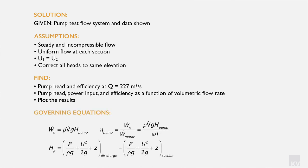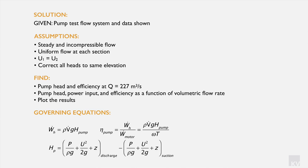Our governing equations are the same as in the previous problem. The work required to develop the head is: Ẇ_H = ρ × Q × g × H_P. The motor efficiency is the work involved in developing the head divided by the rate of work in the motor. We also have our equation representing the pump head — before going further, let's examine what is involved in it.